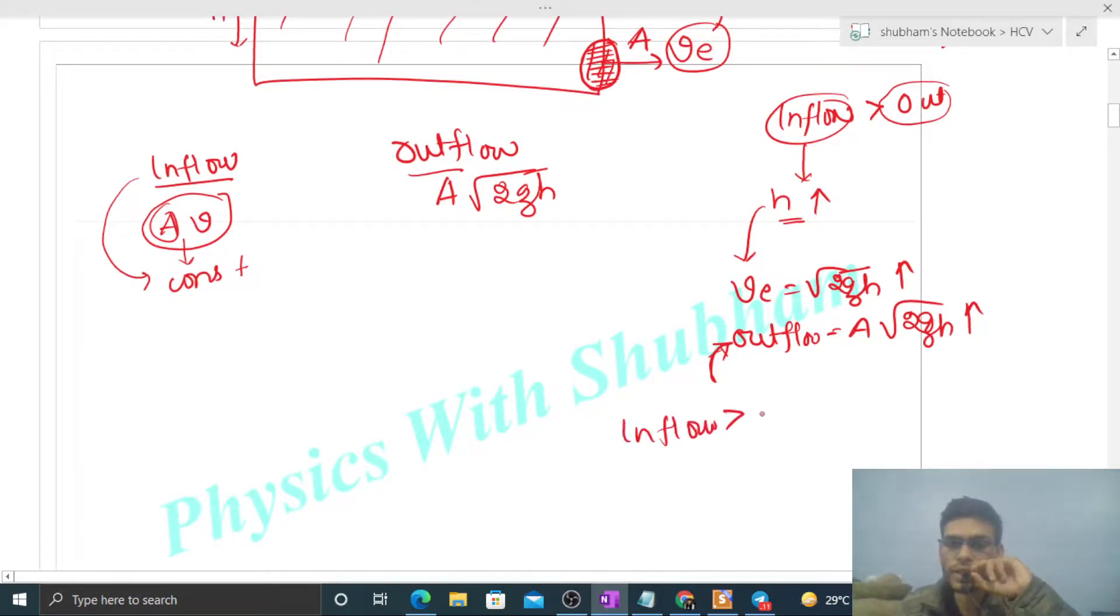And we can say that this outflow will keep increasing. Until when will it keep increasing? As long as inflow is greater than outflow. So initially, you see, this inflow is constant, and the outflow is continuously increasing. Now a time will come when inflow will be equal to outflow, meaning as much water enters will exit.